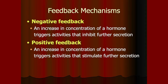Feedback mechanisms: negative feedback means an increase in concentration of the hormone triggers activity that inhibits further secretion — it shuts it down, making sure there's enough. Positive feedback causes a cascade where more and more hormone is secreted. So negative feedback ensures balance, while positive feedback amplifies secretion.